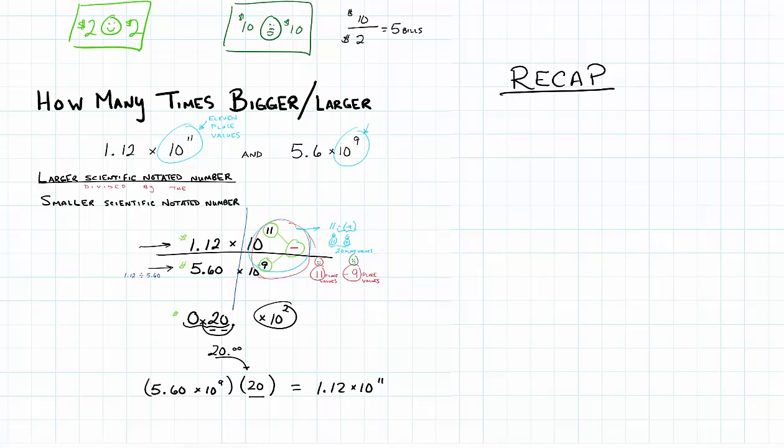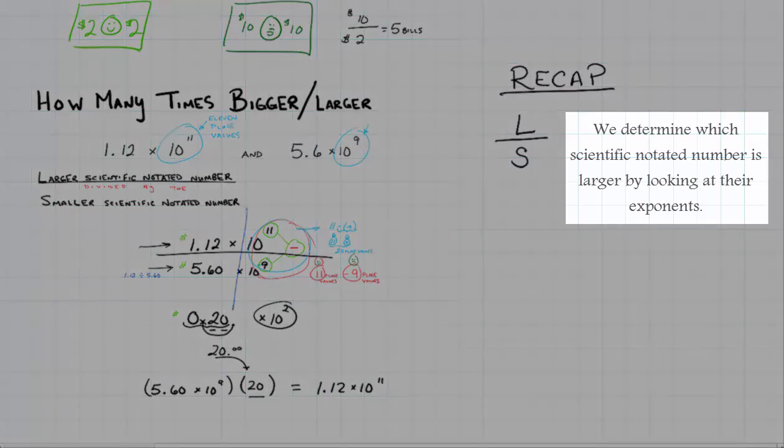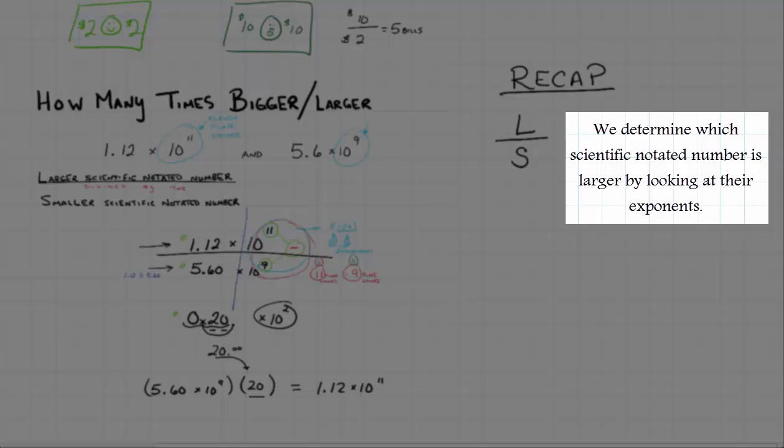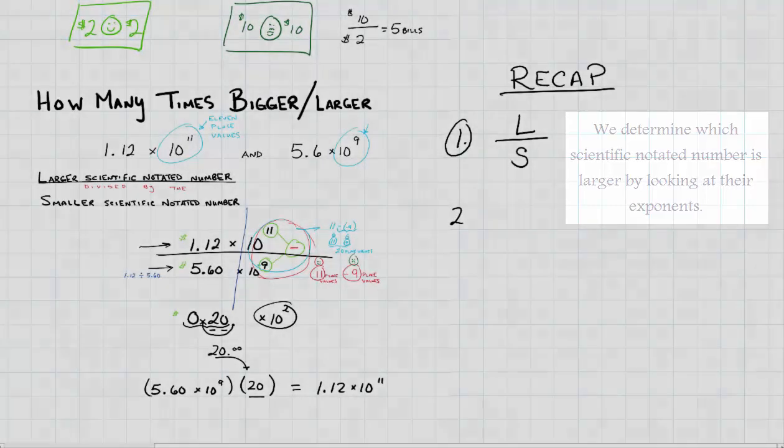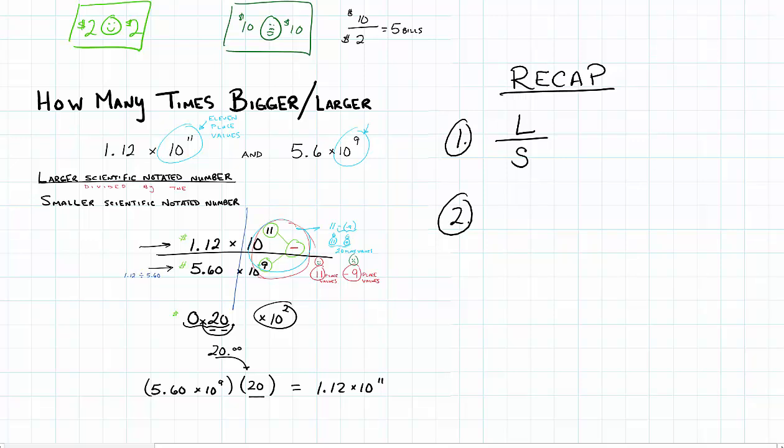All right, here's my quick recap. We need to divide large divided by the small scientific notated number. That's first. Second step, make sure that you divide your dollar amounts first.